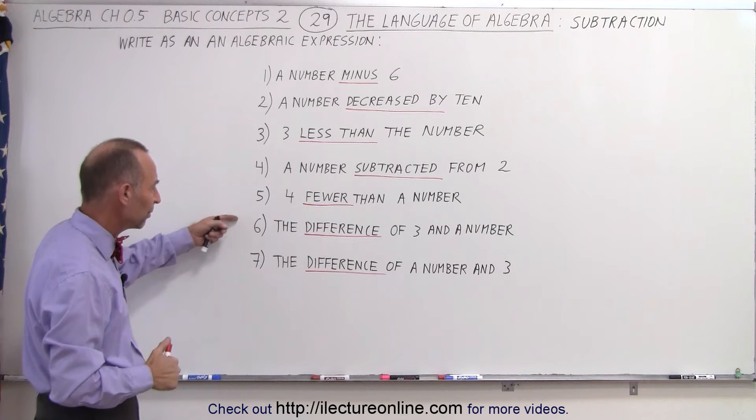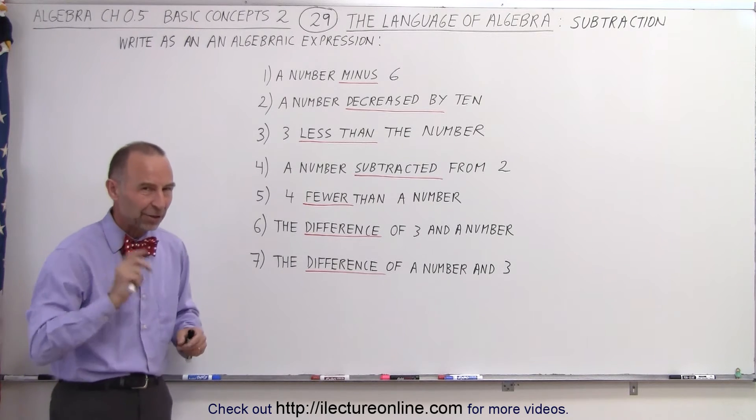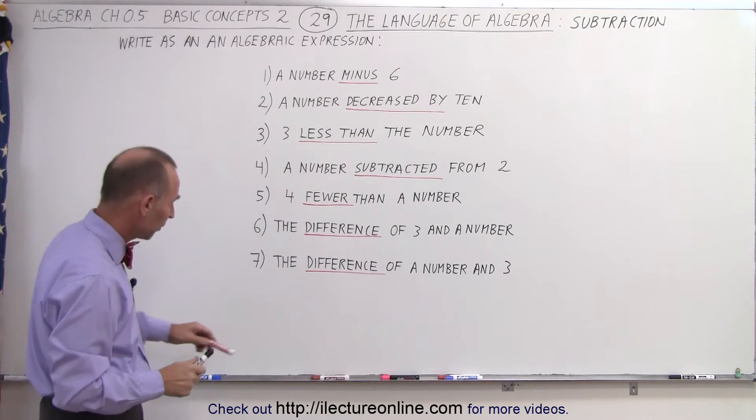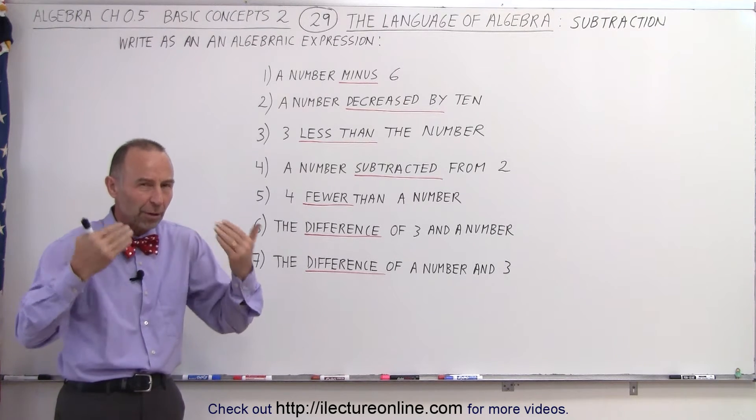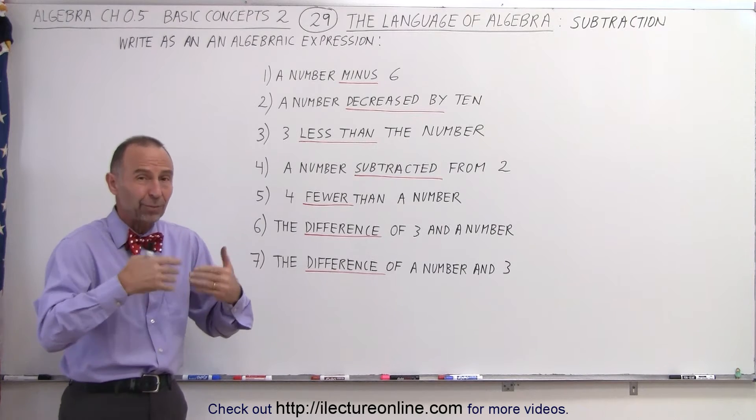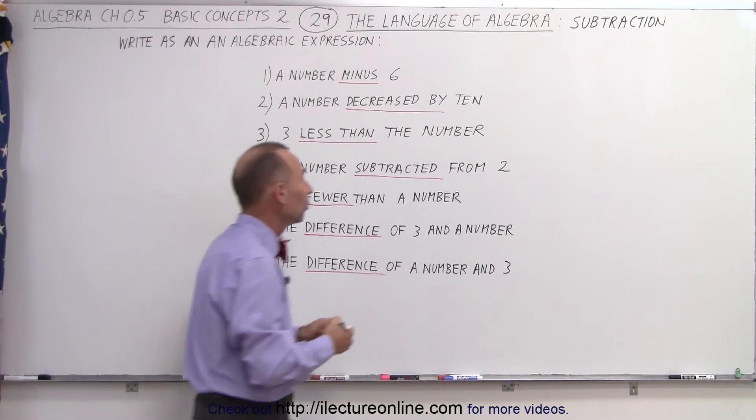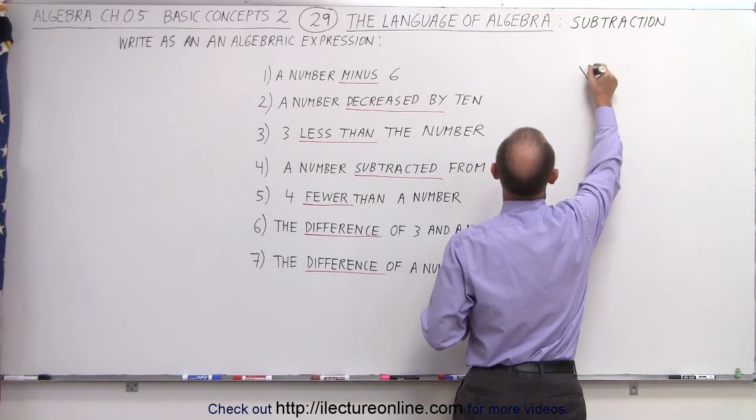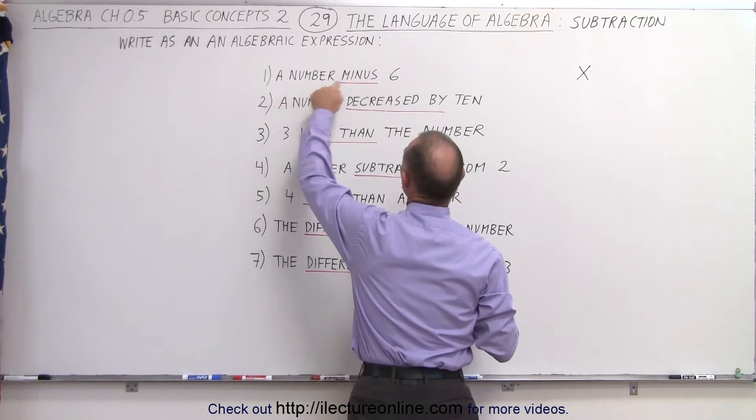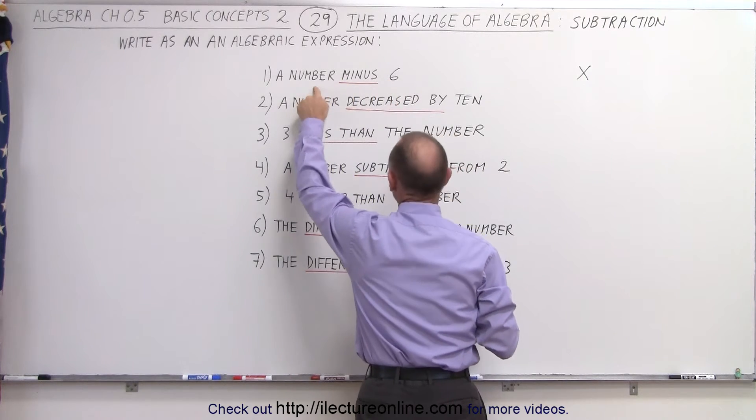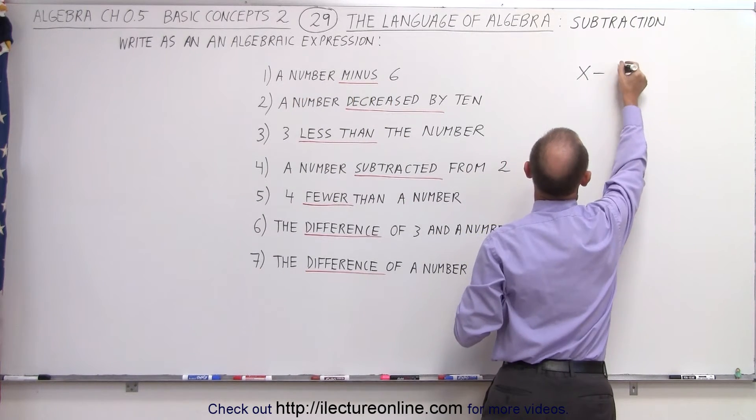But notice there seems to be something interesting about 6 and 7 and we'll deal with that when we get there. But first let's start with a number minus 6. Whenever we see the concept of a number, we want to replace that by some letter representing that number so we can use the letter x. So we write the number x and then we want a number minus 6. Minus means that we're going to subtract this from the number so x minus 6.